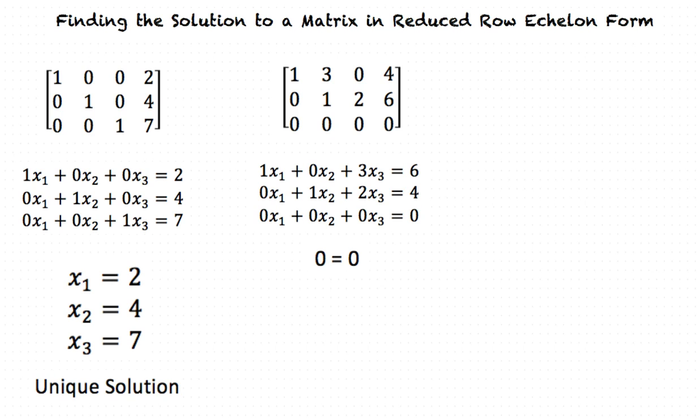Since the bottom row states that 0 is equal to 0, we know that there will be infinitely many solutions. Okay, that makes sense. But how do we know how to write the solutions?